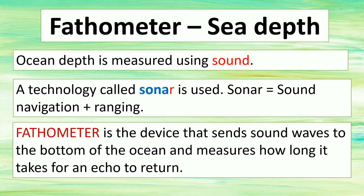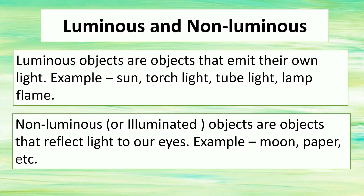Objects that give out light of their own are called luminous objects. Luminous objects emit their own light — examples: sun, torchlight, tube light, lamp, flame. Non-luminous or illuminated objects reflect light to our eyes — examples: moon, paper.